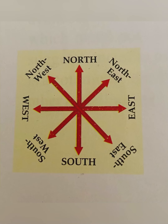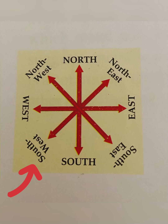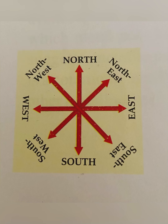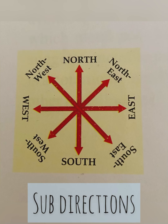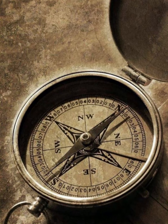Apart from these four directions, you also have Northeast, Southeast, Southwest, and Northwest. In between North and East comes Northeast. In between East and South comes Southeast. In between South and West comes Southwest. And in between North and West comes Northwest. So in-between directions are also called sub-directions.